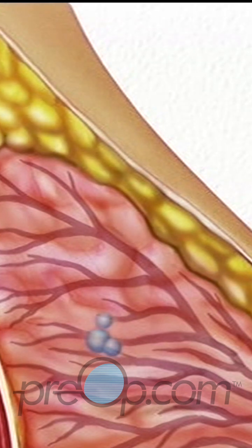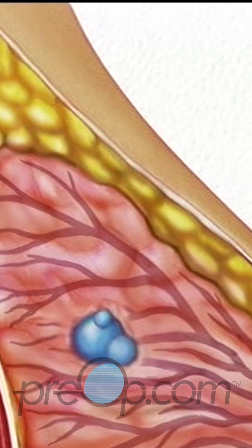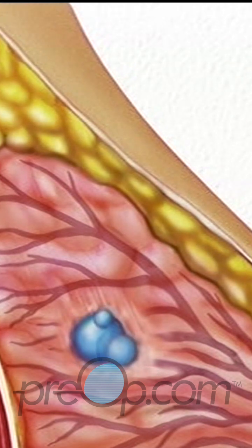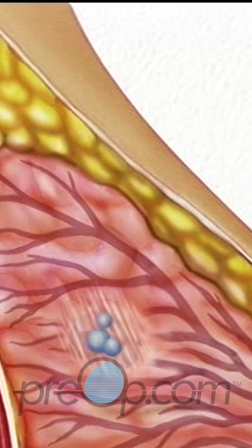A second kind of lump is caused by changes in breast tissue triggered by the growth of a cyst. Even after the cyst itself has gone away, it can leave fibrous tissue behind.